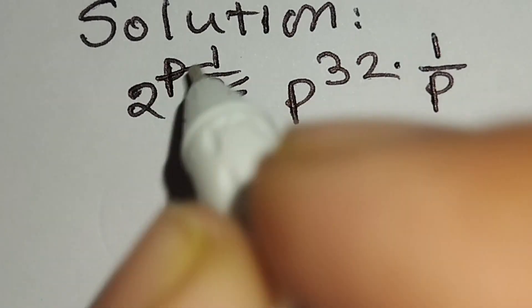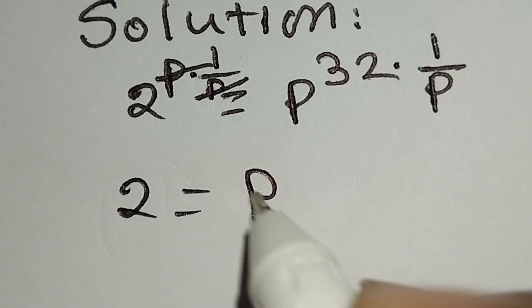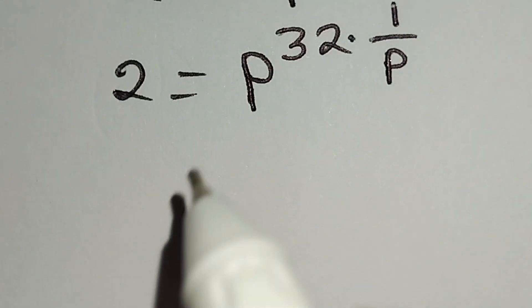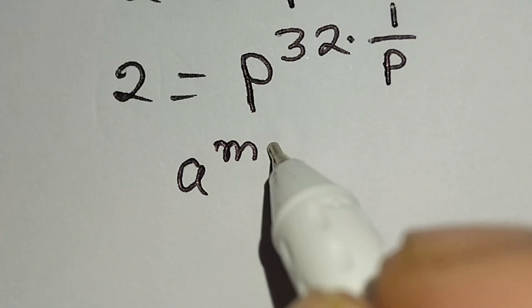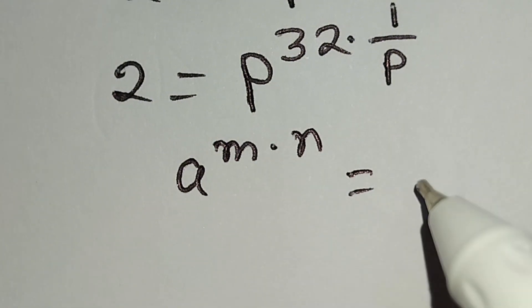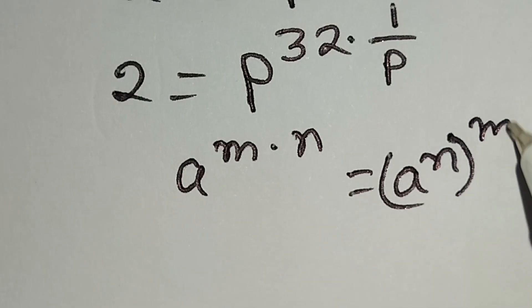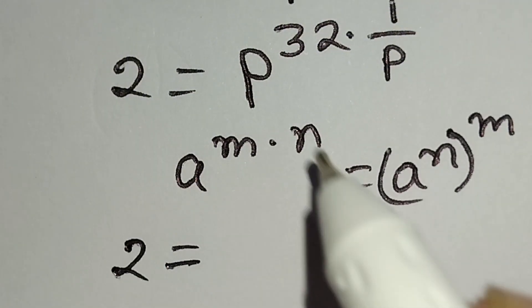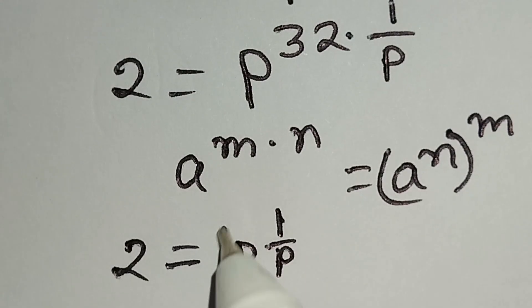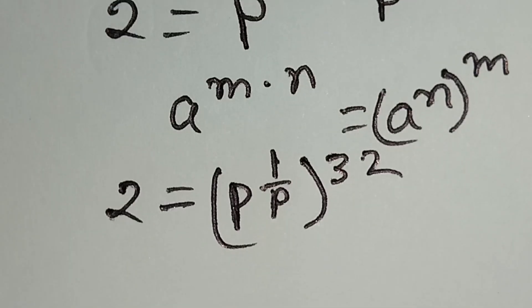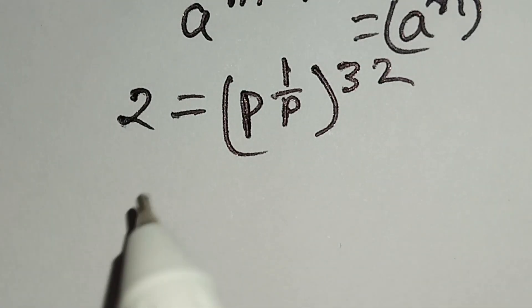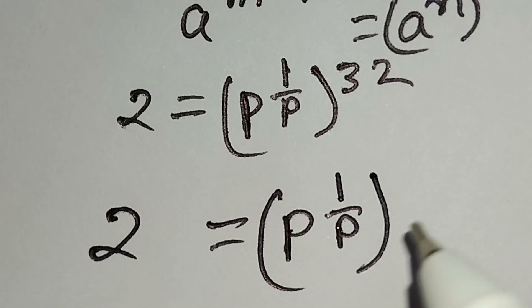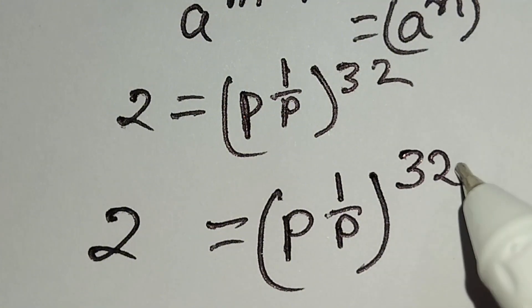Here p and p cancel, the remaining is 2 is equal to p to the power 32 times 1 over p. We know a to the power m times n is equal to a to the power n whole power m. According to this identity, we can write this as 2 is equal to p to the power 1 over p, whole power 32.